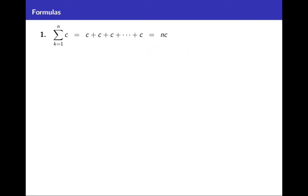Now we have our notation, and there are some great formulas that go with it. First: the sum from k = 1 to n of c, where c is a constant — that's just adding c to itself n times, so the answer is n·c. Sum from k = 1 to n of c equals n·c. Very simple, but we'll treat it as a formula.